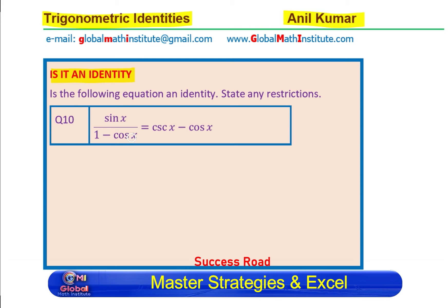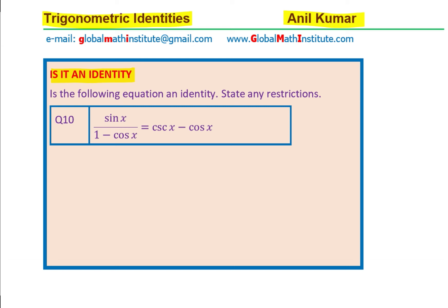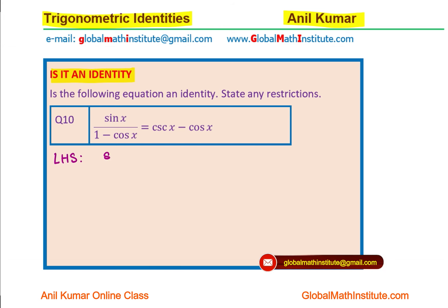Sine x over 1 minus cos x equals cosecant x minus cos x. Now, if it is an identity, the left side should be equal to the right-hand side. Let us begin from the left-hand side and see whether we could equate it to the right-hand side. Starting from the left-hand side, we get sin x over 1 minus cos x.